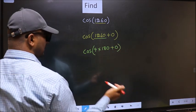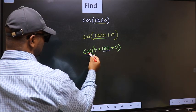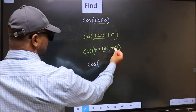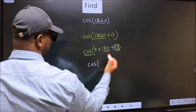Next, here we have 180. So cos is not going to change, it will remain cos. And inside we get this angle 0.